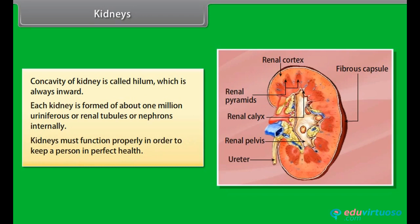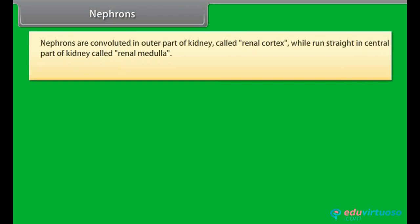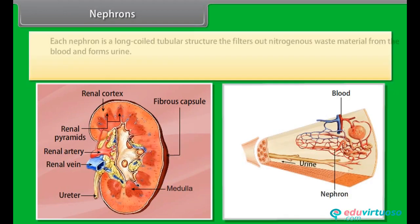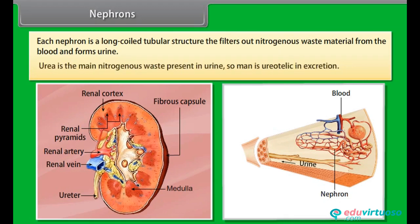Kidneys must function properly in order to keep a person in perfect health. Nephrons are convoluted in the outer part of the kidney called the renal cortex, while they run straight in the central part of the kidney called the renal medulla. Nephrons are the functional units of kidneys. Each nephron filters out nitrogenous waste material from the blood and forms urine. Urea is the main nitrogenous waste present in urine, so man is ureotelic in excretion.